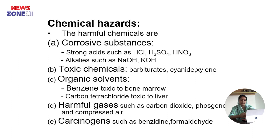Harmful chemicals include corrosive substances such as strong acids — hydrochloric acid, sulfuric acid, nitric acid — and alkalis such as sodium hydroxide and potassium hydroxide. Toxic chemicals include barbiturates, cyanide, etc. Organic solvents: benzene, toxic to the bone marrow; carbon tetrachloride, toxic to the liver. Harmful gases such as carbon dioxide and compressed air. Carcinogens such as benzidine and formaldehyde.